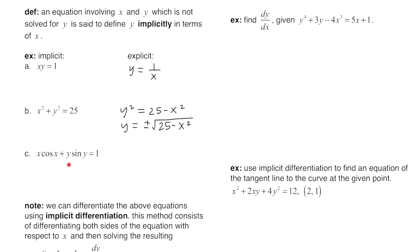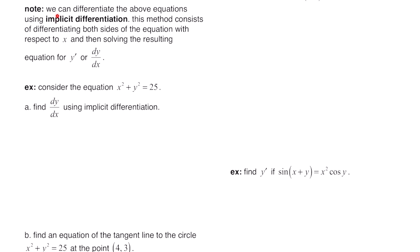In this last equation, you still have x's and y's jumbled up on the left side, but because we have y times sine of y, it's going to get really challenging to try to rewrite it in explicit form. That's why we have this process called implicit differentiation. This method consists of differentiating both sides of the equation with respect to x, and then solving the resulting equation for y prime or dy/dx in order to find its derivative.